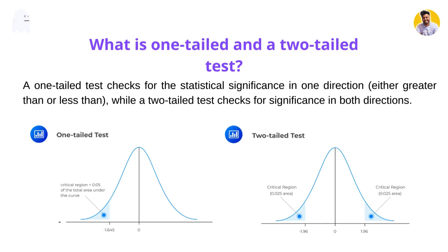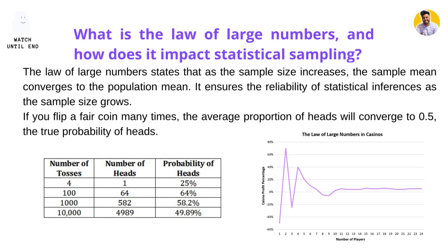Our next interview question is: what is the law of large numbers? The law of large numbers states that when the sample size increases, the sample mean converges to the population mean. It is similar to the central limit theorem, but the difference is that it follows the mean while the central limit theorem follows the distribution principle. It ensures the reliability of statistical inference as the sample size grows. For example, if you flip a coin many times, the average proportion of heads will converge to 0.5 — the true probability of heads.